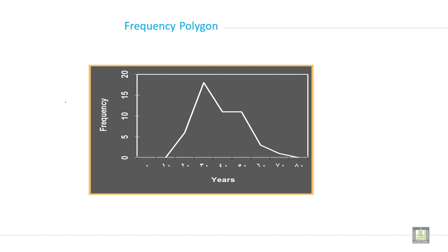This is frequency polygon. When you are drawing like this is first, then this is second bar. This is the midpoint. This is the midpoint of each bar. And when you draw midpoint of each bar like this, then this line is called line graph or you can say frequency polygon. Both is the same line graph and frequency polygon.